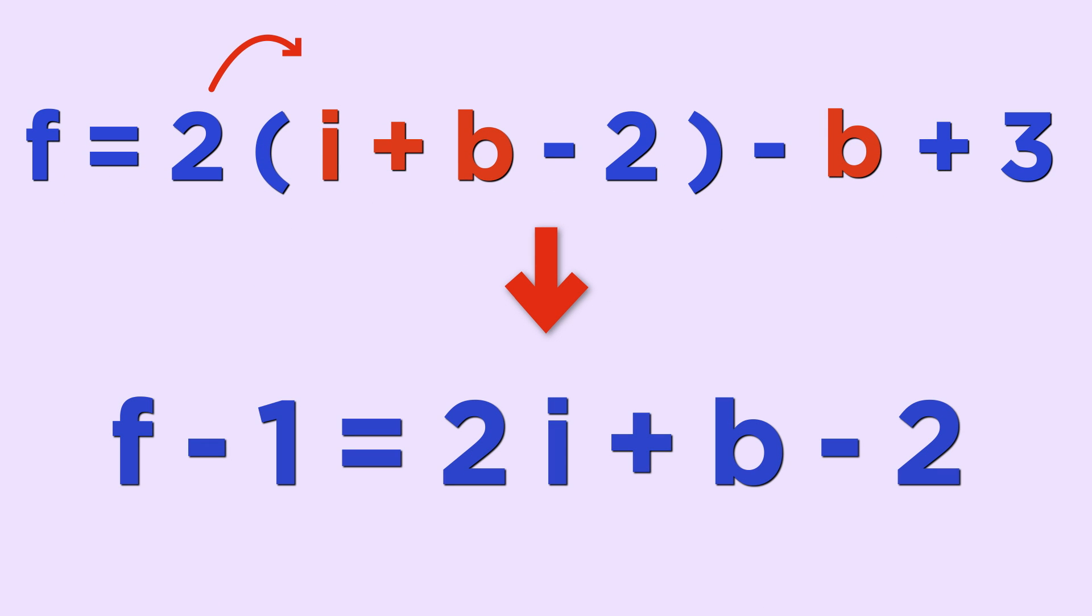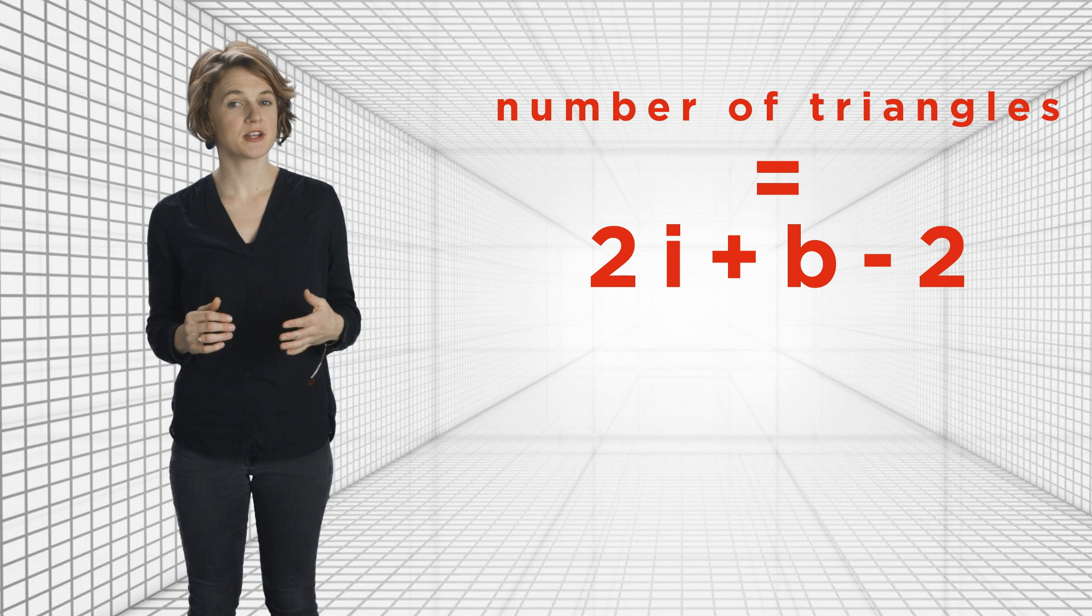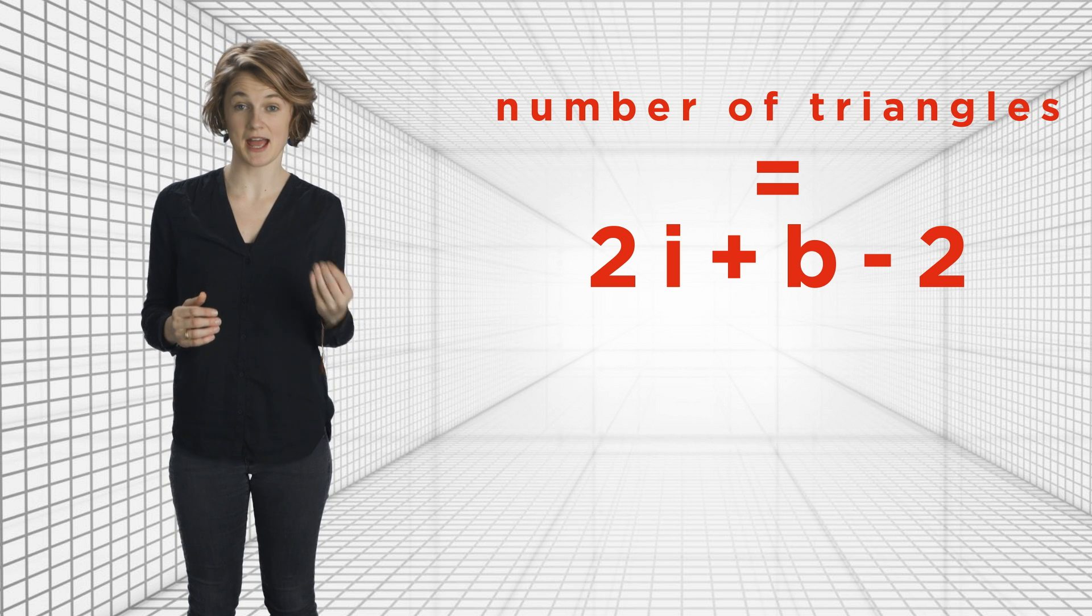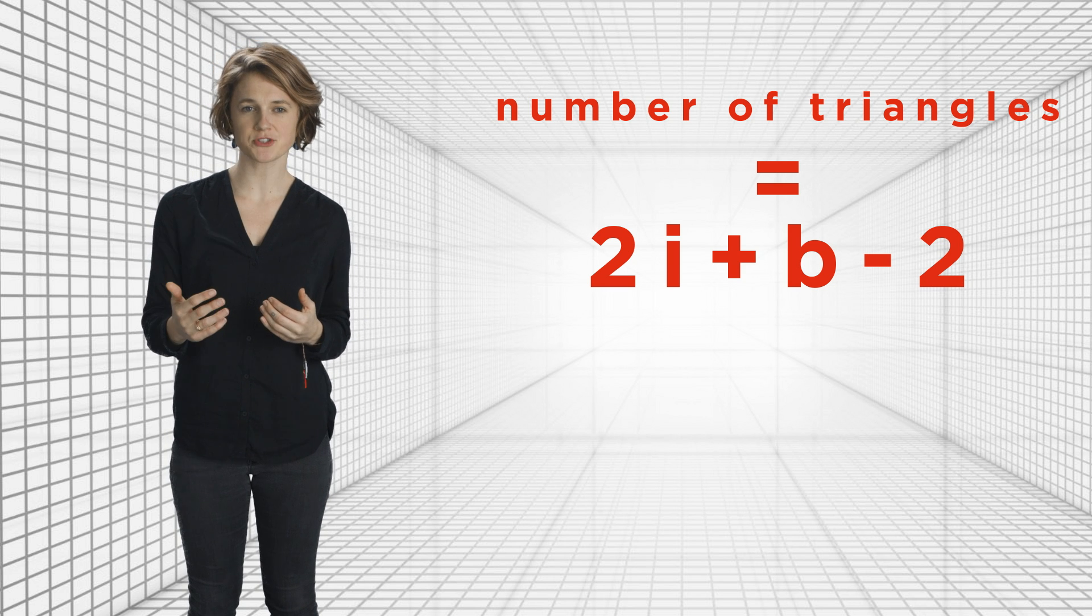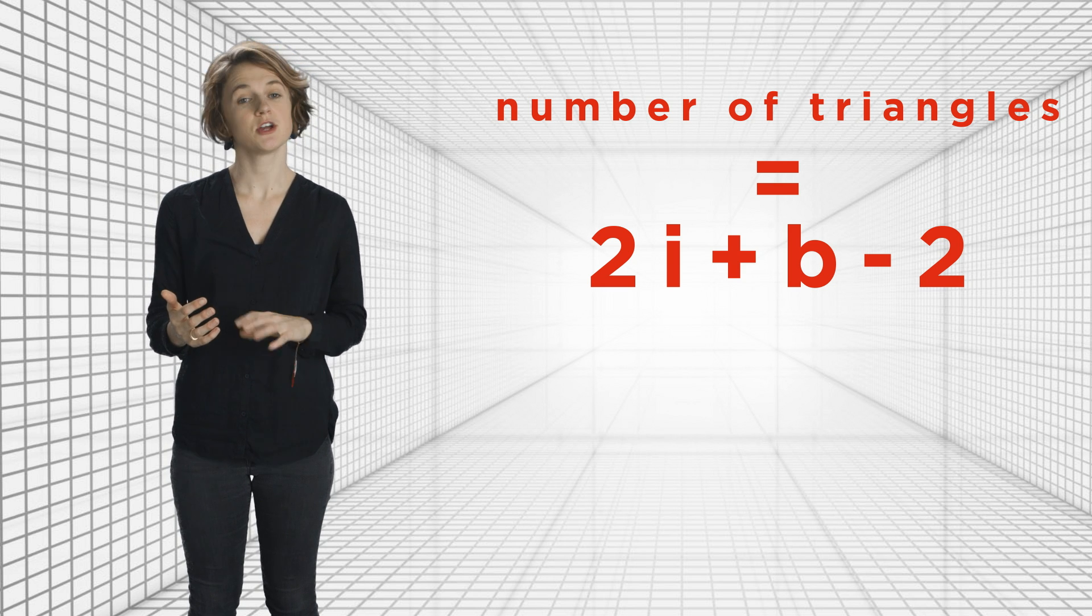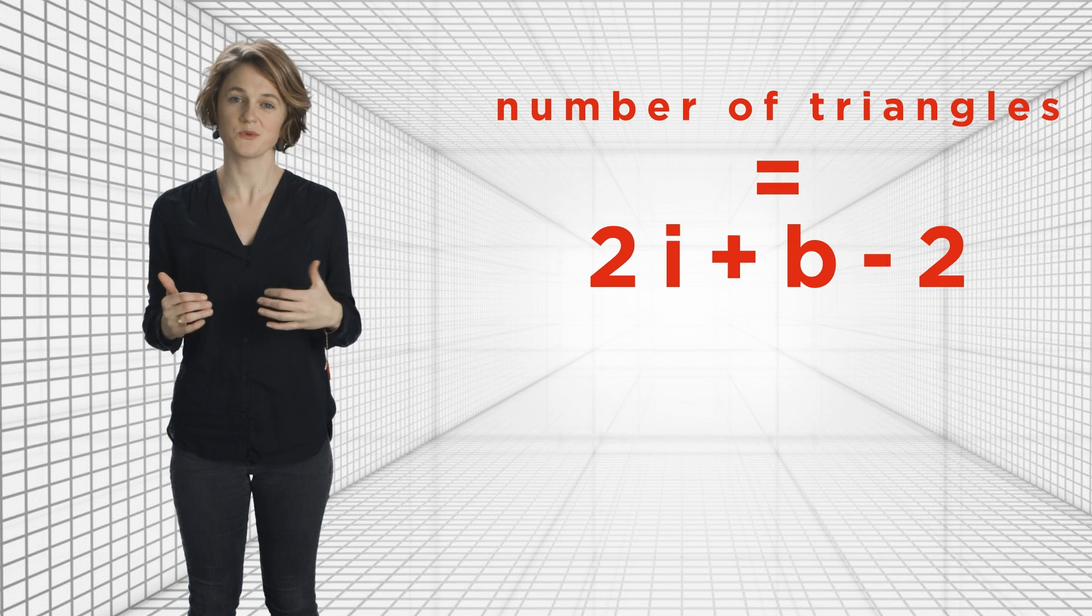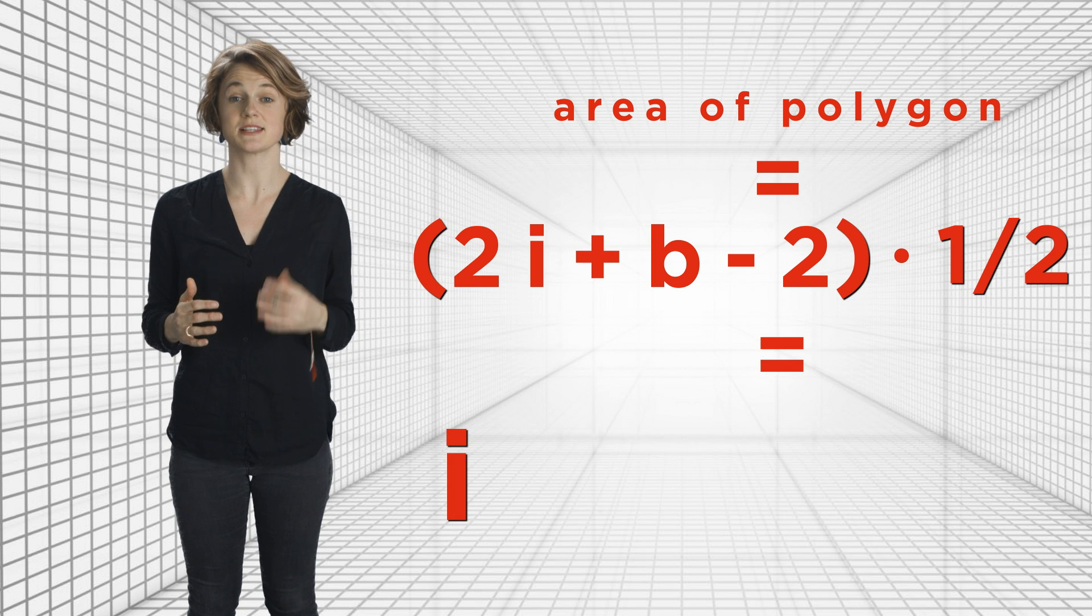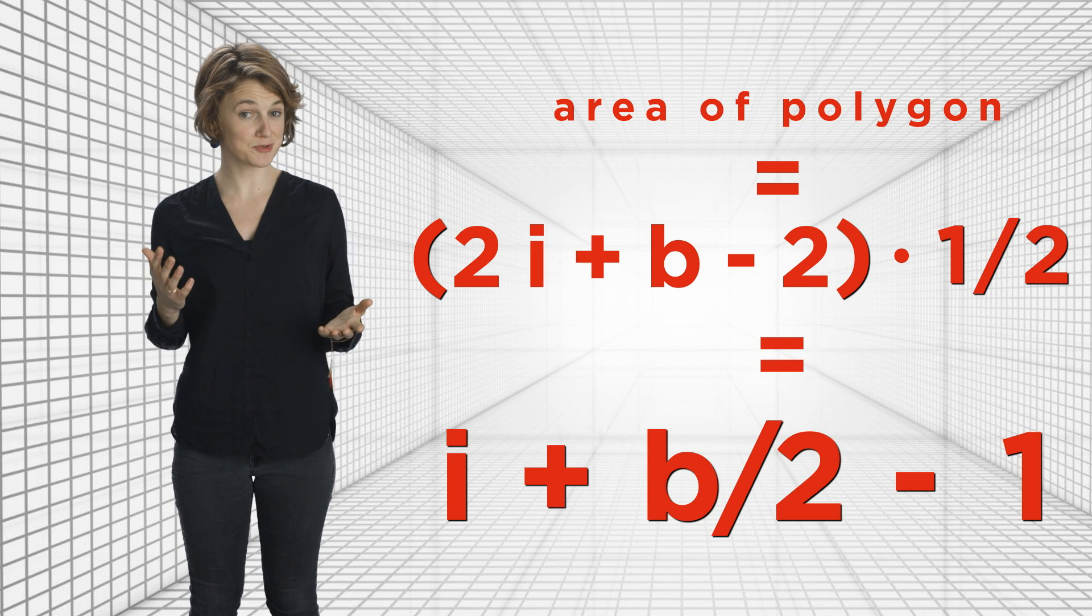We distribute the two, rearrange the terms, and then subtract 1 from both sides. Now we know how many small triangles there are: 2i plus b minus 2. Step 1 showed us that each small triangle has area 1 half. So the area of the entire polygon is the number of small triangles it's broken into, 2i plus b minus 2, times the area of each small triangle, 1 half. That gives us i plus b divided by 2 minus 1, which proves Pick's theorem.